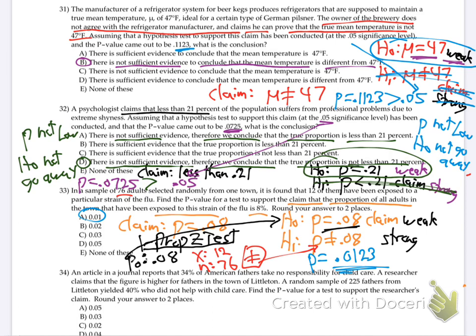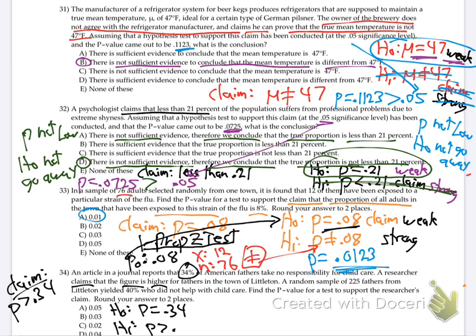What's being claimed? The researcher claims the figure is higher in Littleton — higher than the 34% average for all of America. So the claim is p is greater than 0.34. That tells us our H0 and H1: H0 is always equals, so H1 is greater than.